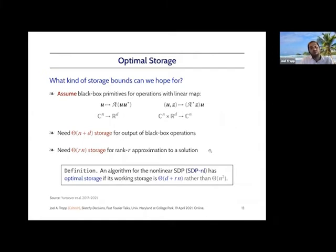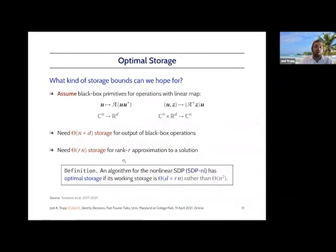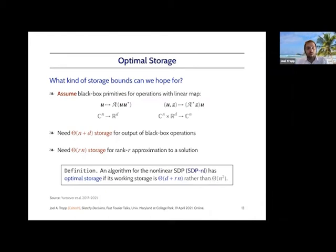The storage cost associated with the operations is N plus D just to store the output. And instead of reporting a solution to the nonlinear SDP, we're just going to report a low-rank approximation to the solution. That's going to take order R times N storage to report that low-rank matrix in factored form. An algorithm for solving the nonlinear SDP is storage-optimal if its working storage is D plus RN — rather than the N-squared storage it would take to write down the full matrix variable. Any optimal storage algorithm is therefore forbidden from ever writing down a full-size matrix variable.